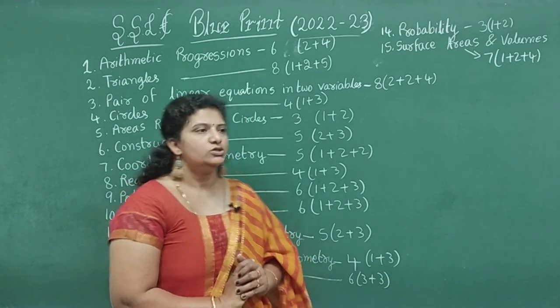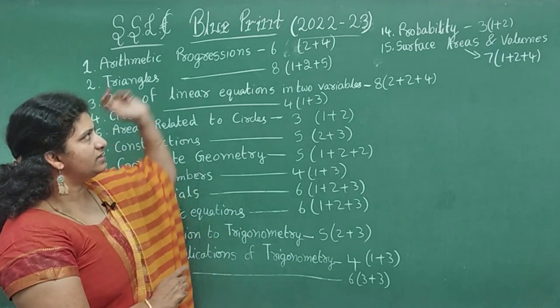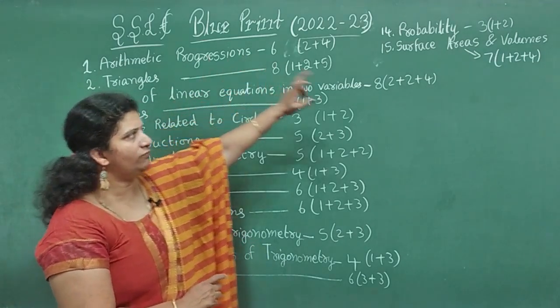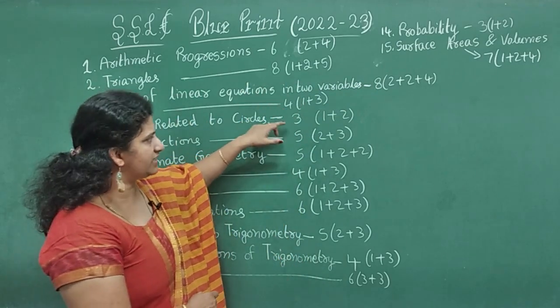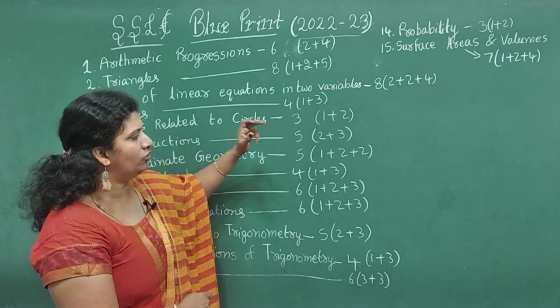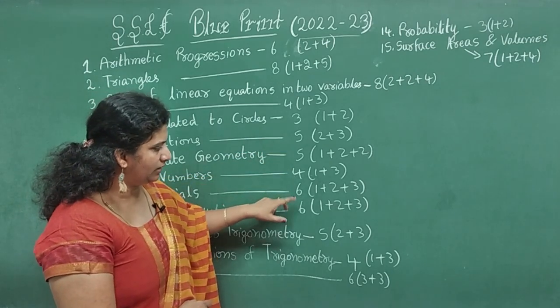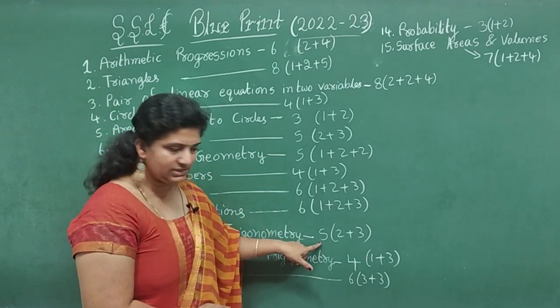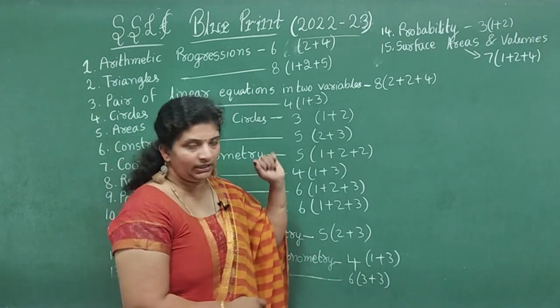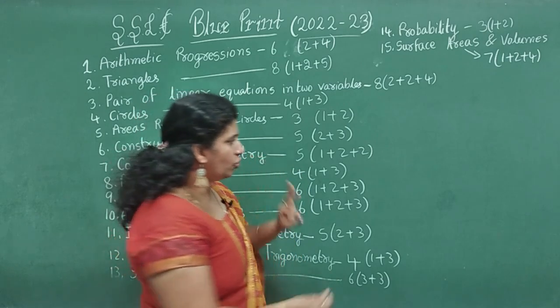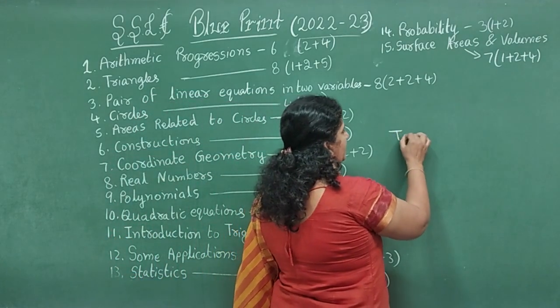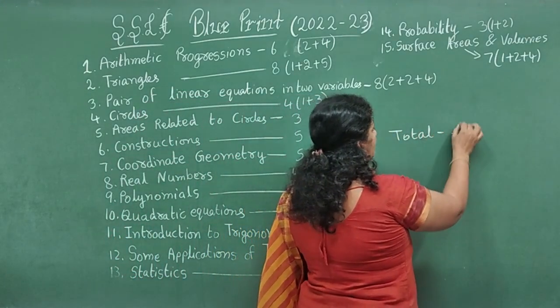Let us add all this: 6 plus 8 is 14, 14 plus 8 is 22, 22 plus 4 is 26, then 29, 34, 39, 43, 49, 55, 60, 64, 70, 73, 80. So total your question paper is for 80 marks.